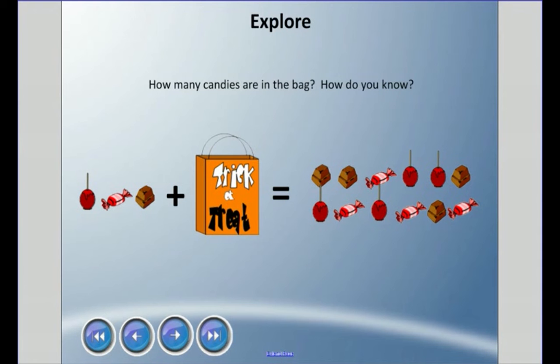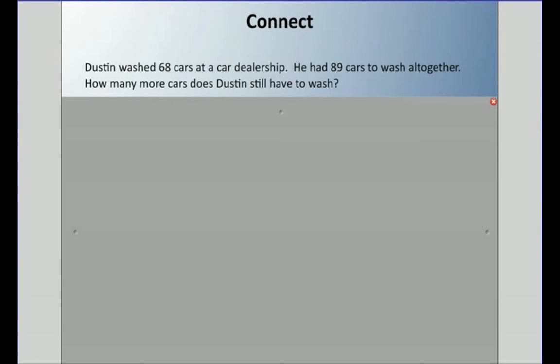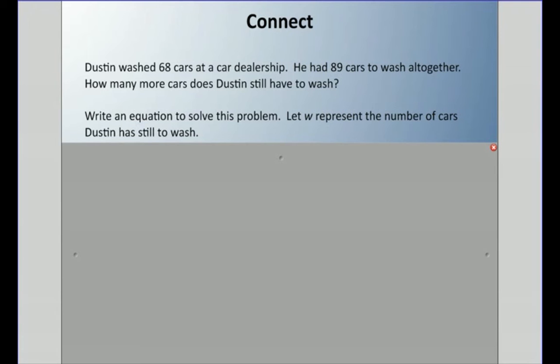To start off, how many candies are in the bag and how do you know? All right, let's say Dustin was washing cars at a car dealership. He washed 68 of them, and he had 89 cars to wash all together. How many more cars does Dustin still have to wash? We're going to write an equation to solve this problem, and we're going to use w to represent the number of cars Dustin still has to wash.